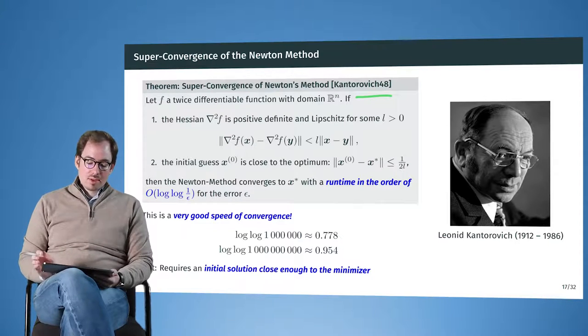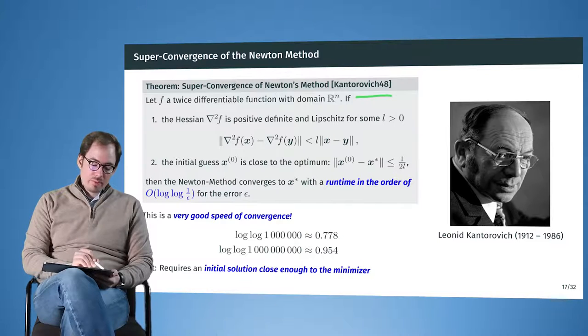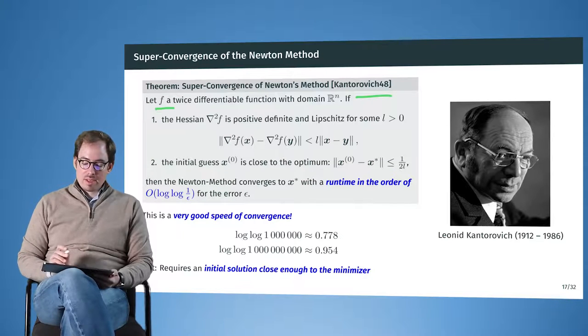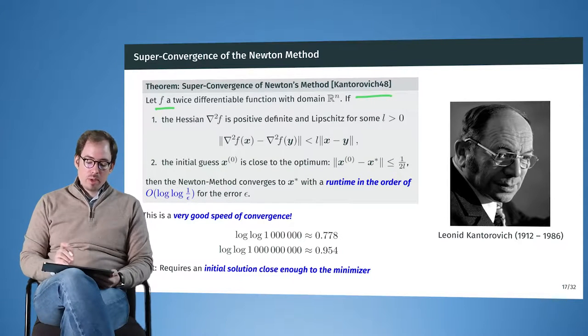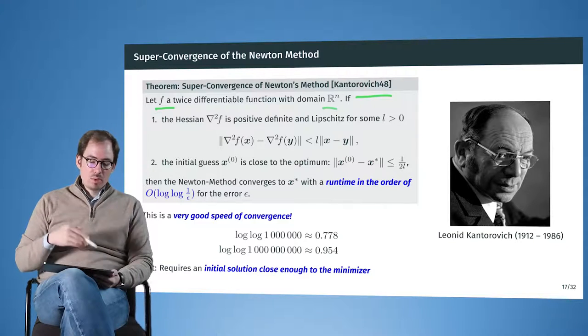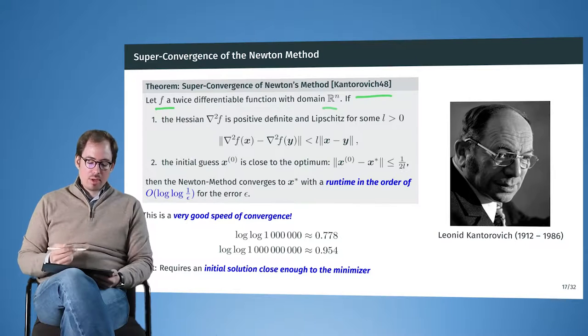So, here we say that our f is assumed to be twice differentiable with rn as the domain. So we can compute the Hessian at every location. And if this Hessian is positive definite,